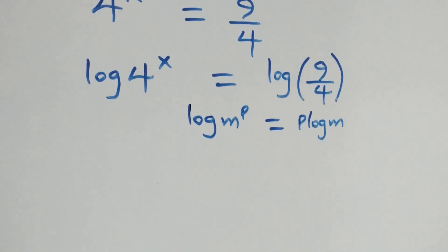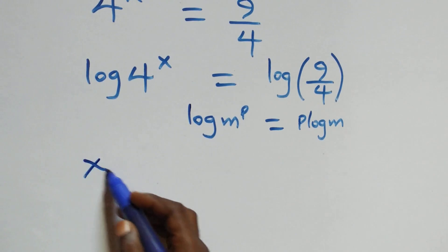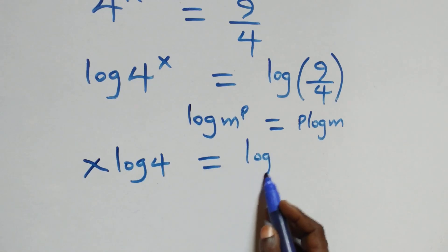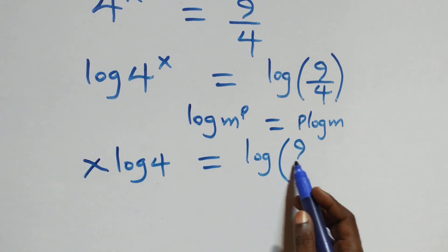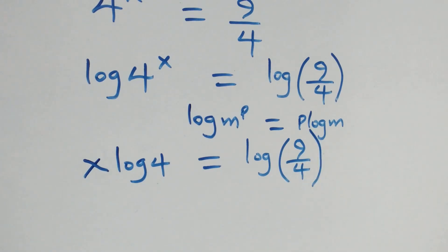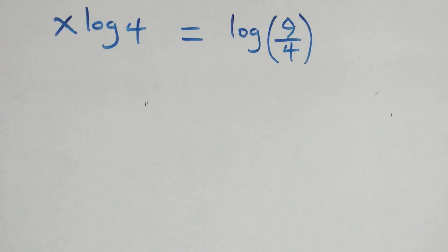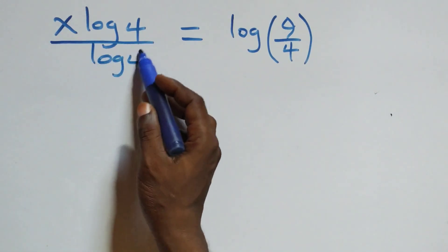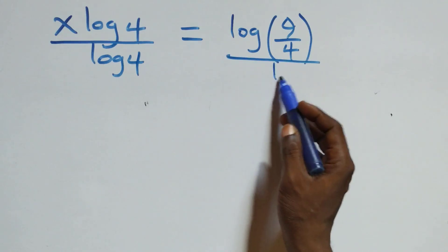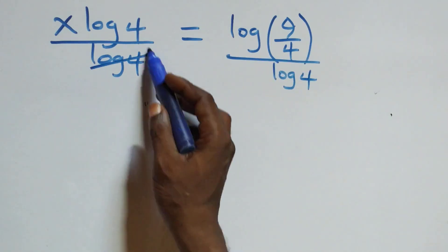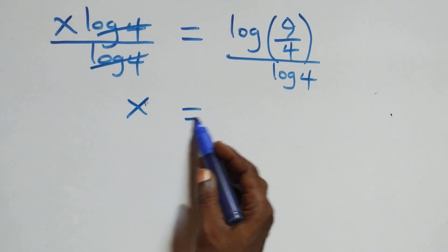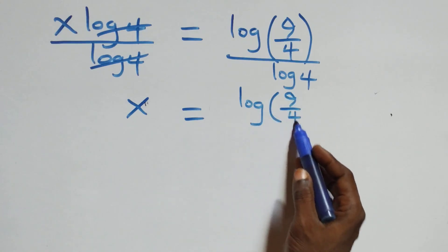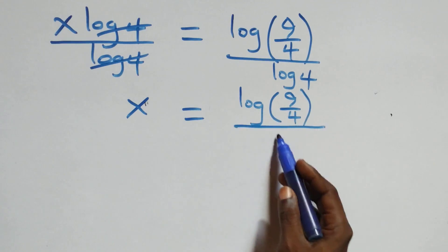What we have becomes x log 4 equals log of 9 over 4. We then divide both sides by log 4. The log 4s cancel each other, and we have x equals log(9/4) divided by log 4.